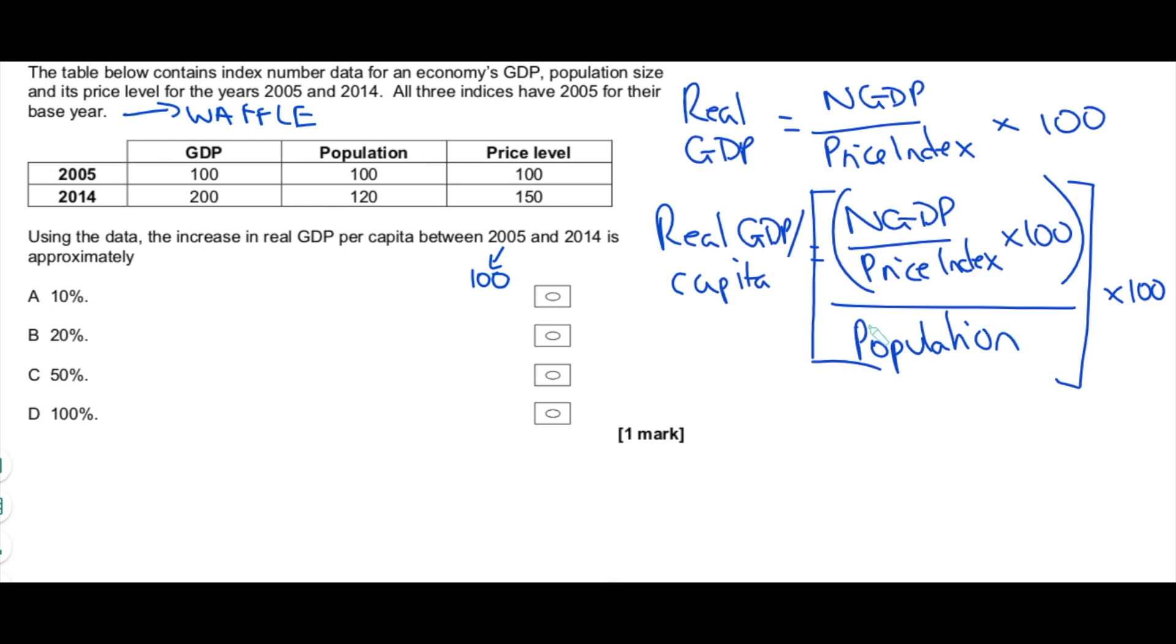So let's apply all of that here. This is very simple. We need to work out real GDP per capita in 2014. So in 2014, nominal GDP was 200. So it's 200 there, divided by the price index, which is 150, multiplied by 100, and if you work all that out, that will give you a figure of 133.33. So that's real GDP.